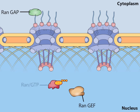In this form, RAN-GTP can disrupt the binding of importin and its cargo, triggering the release of the cargo in the nucleus.